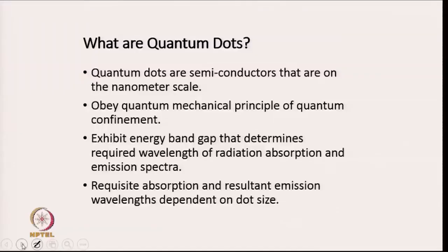Let us discuss about what quantum dots are. Quantum dots are semiconductors that are on a nanometer scale and, as the name suggests, they obey the quantum mechanical principle of quantum confinement. They show an energy band gap that tells you about the wavelength of electronic transition, either related to absorption or emission spectra. The absorption and emission wavelength is dependent on the size of the quantum dot.